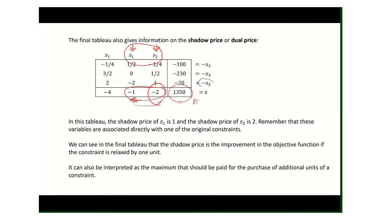You can also think of shadow price in terms of the price that should be paid for the purchase of additional units. For constraint 1 (process 1), how much are you going to pay for another hour? If you can pay somebody less than $1 for it, you're getting a net benefit. For process 2, if somebody says for $3 I can give you an extra hour, this tells you you only get a $2 benefit — it's not worth paying $3. So it's essentially the cost of that process.